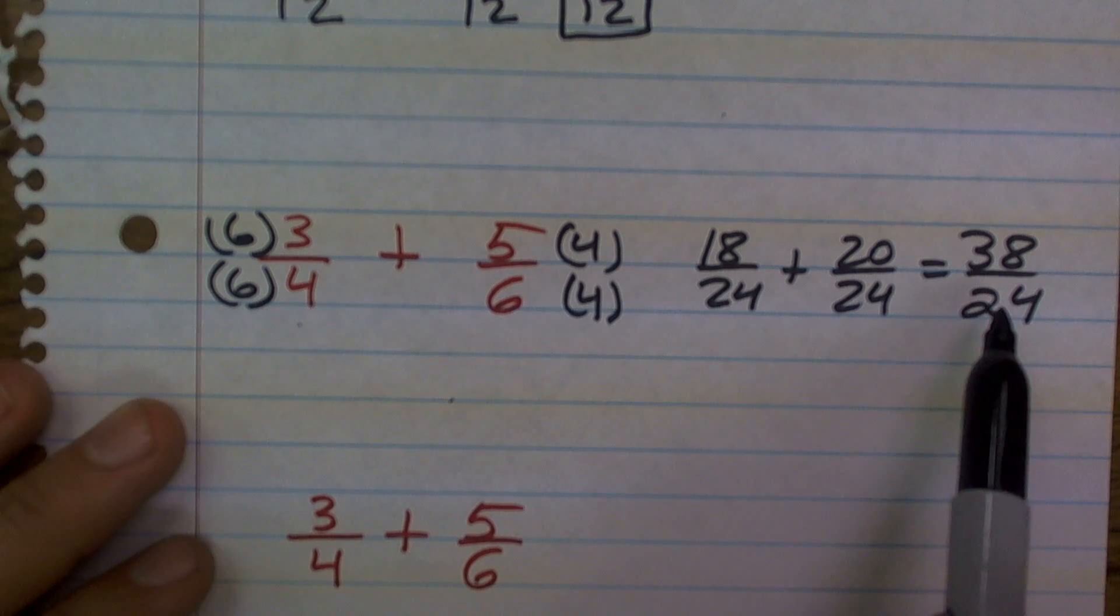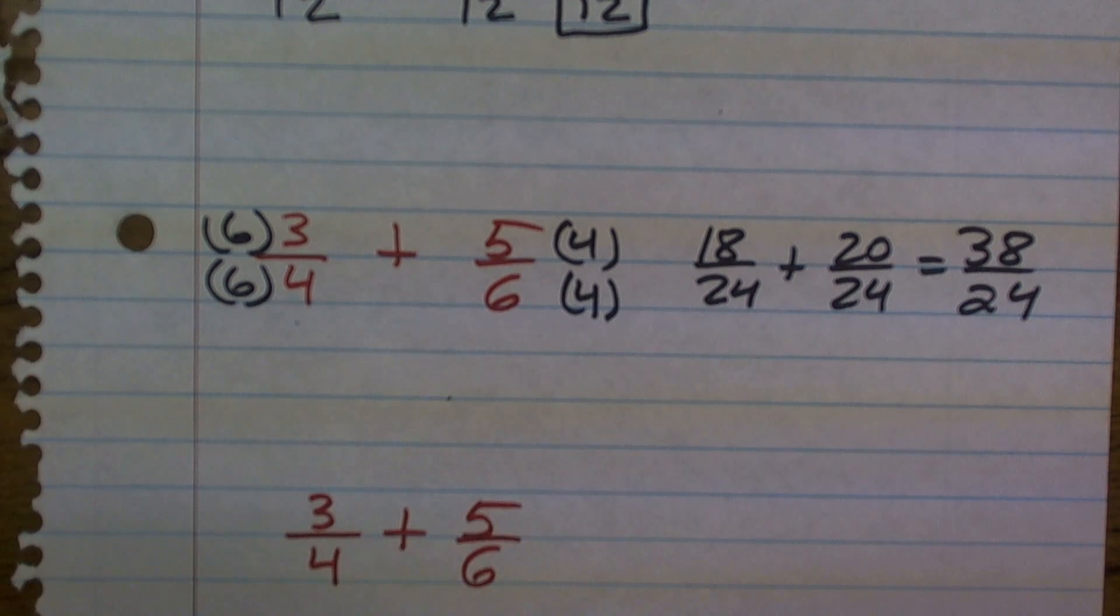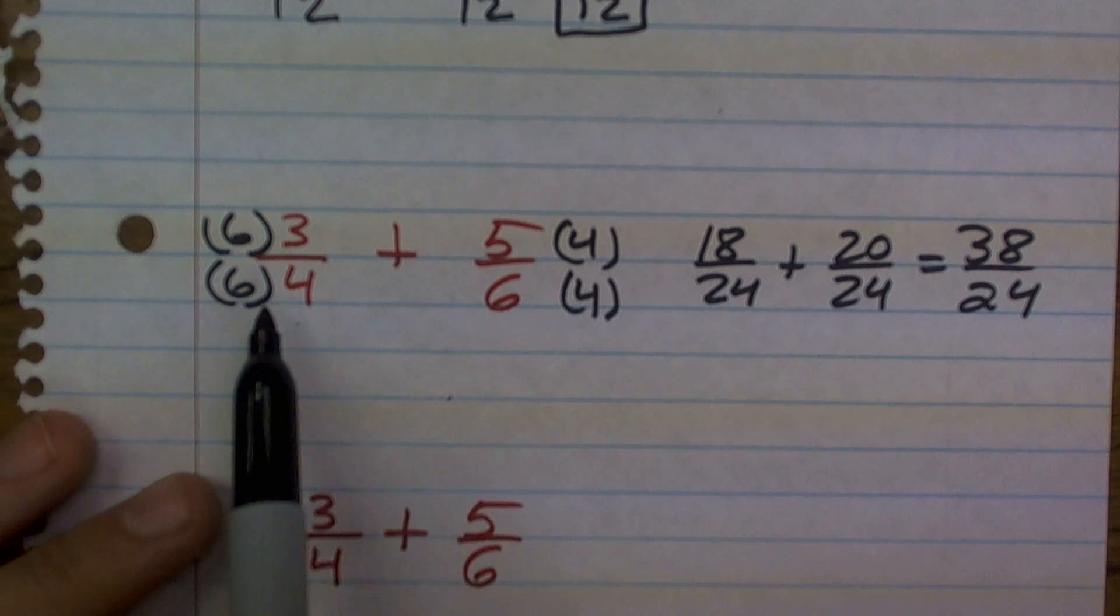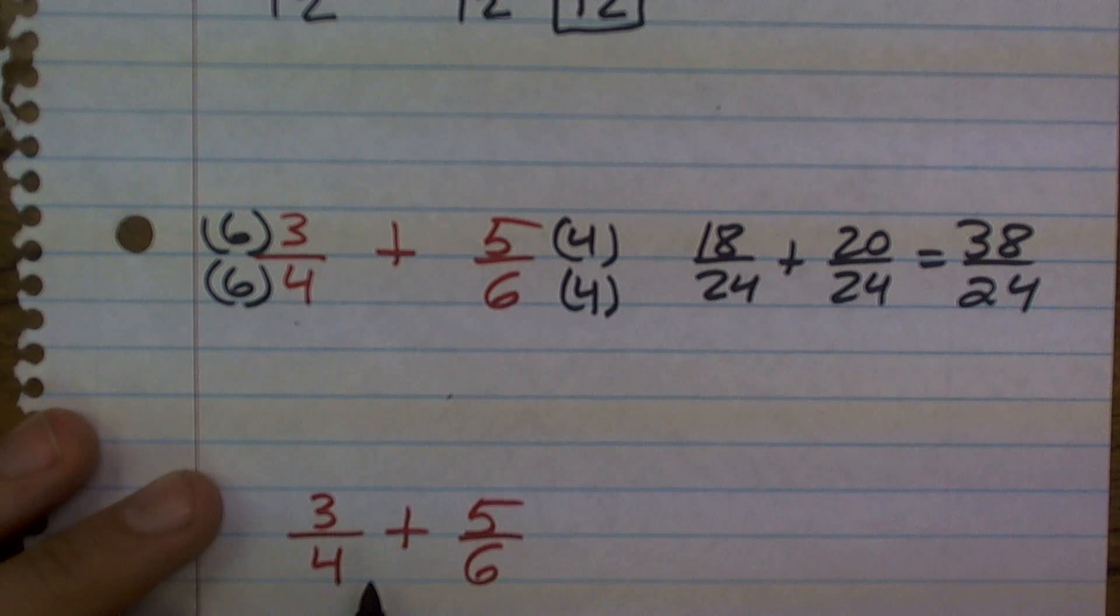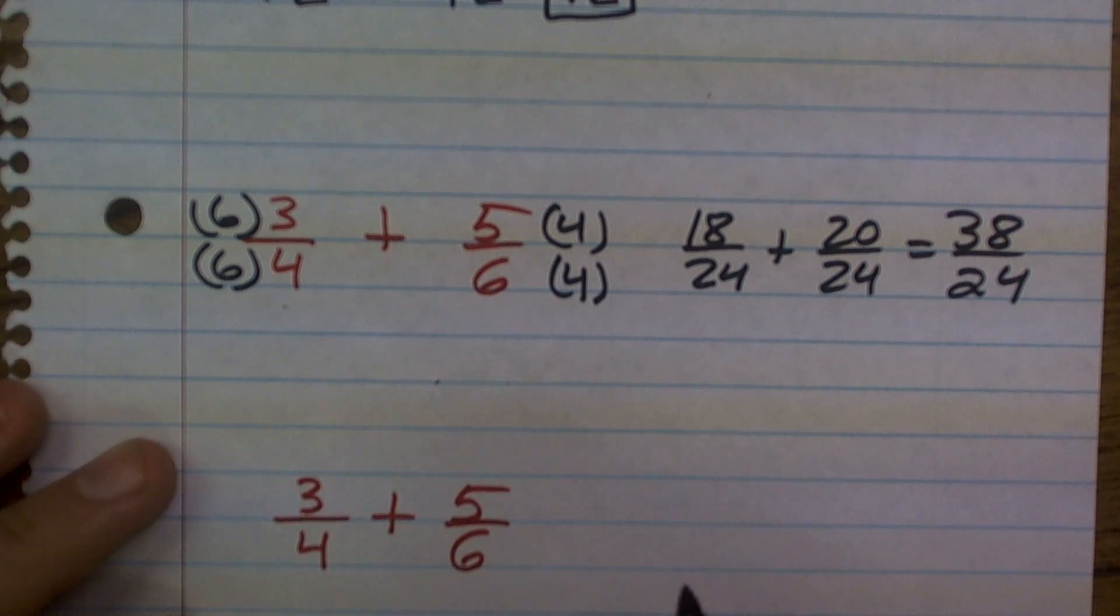I now have to reduce my ending fraction. So that's why it's always important to find the lowest common multiple. And the lowest common multiple is not 24, but it's actually 12, as 4 and 6 both go into 12.